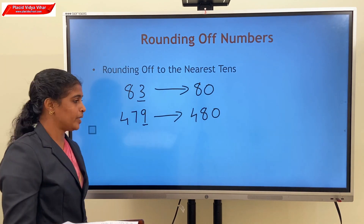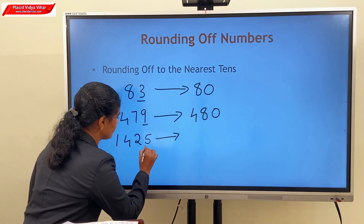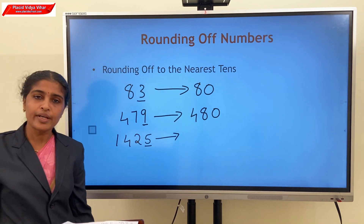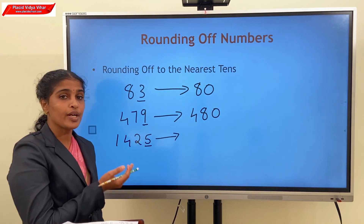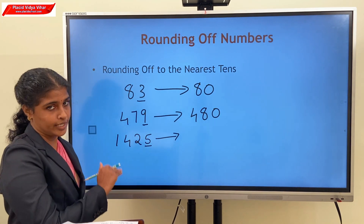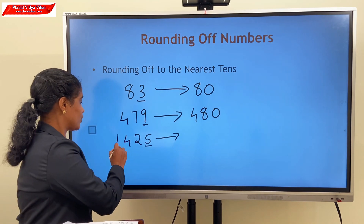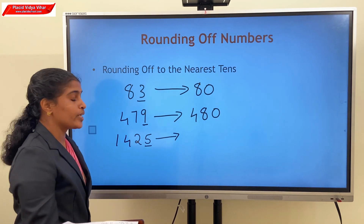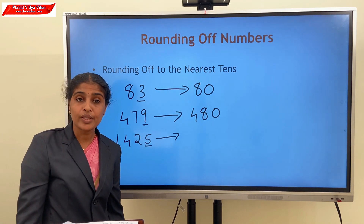Consider another example where the ones digit is 5. Since it is 5 or more, we add 1 to the tens place. So 1,425 becomes 1,430.